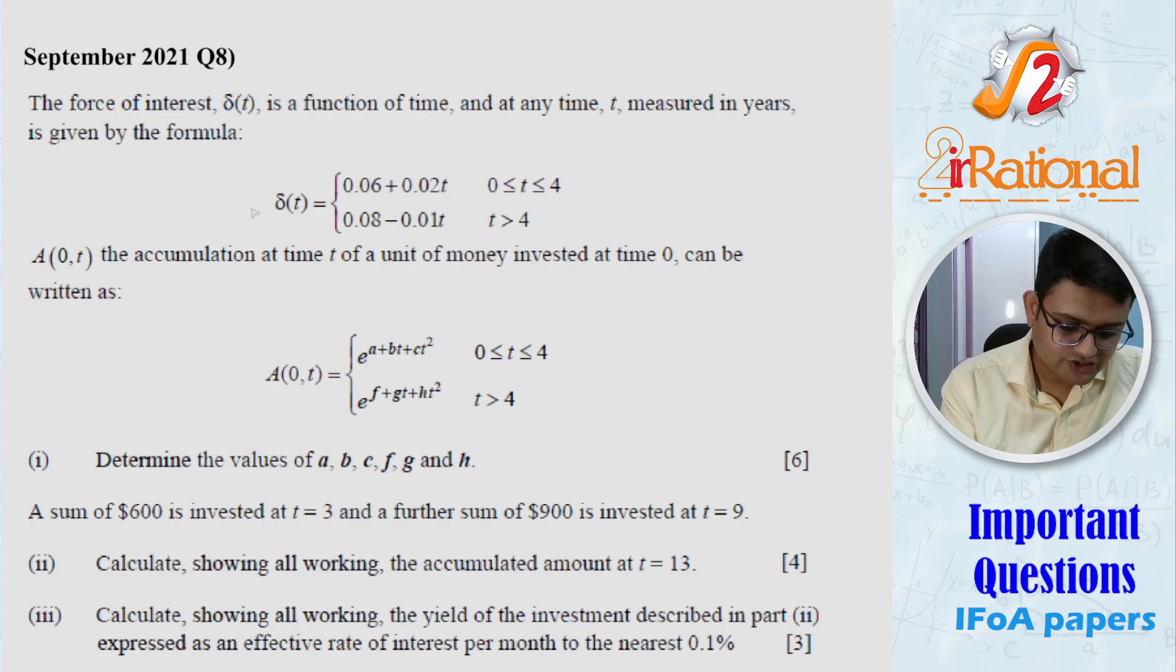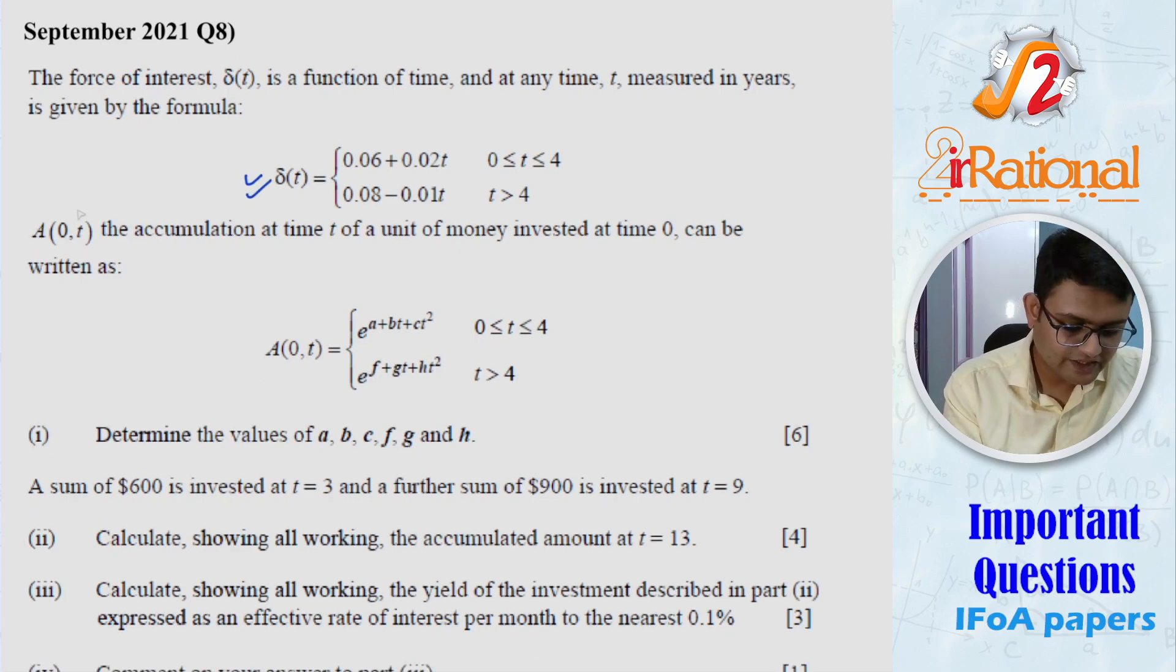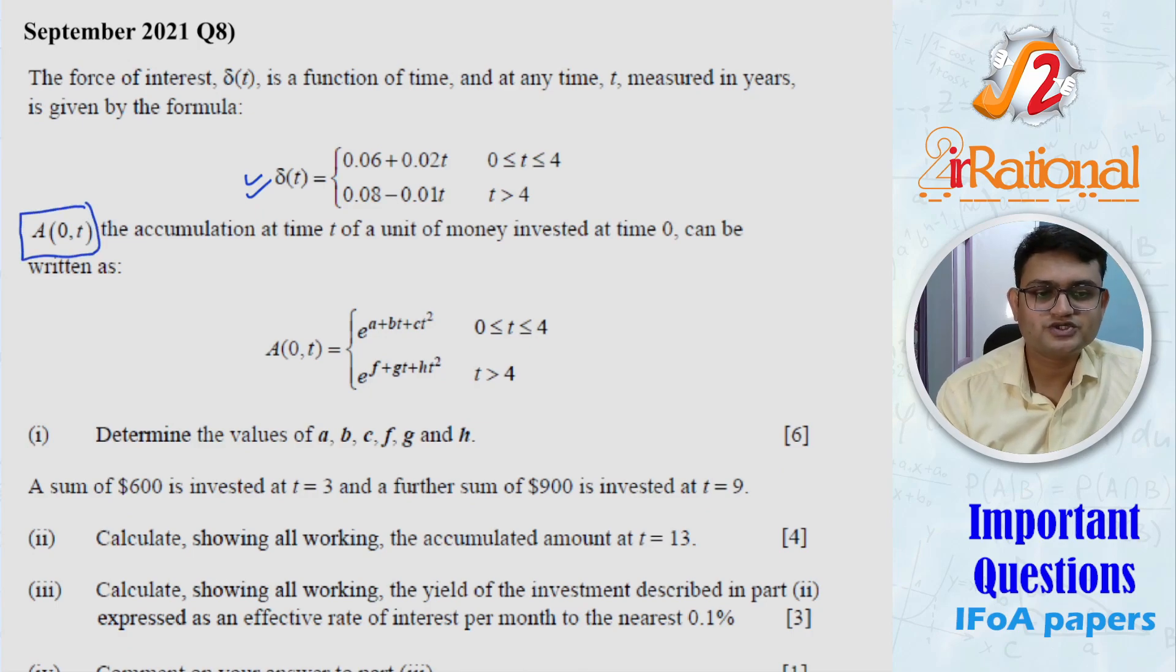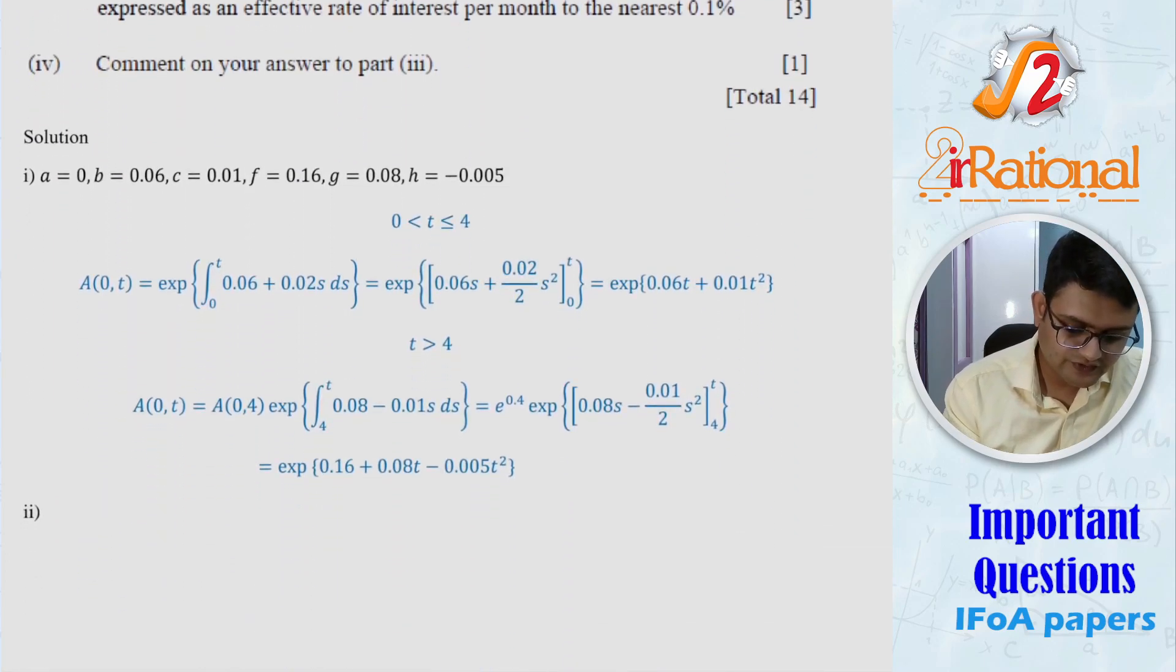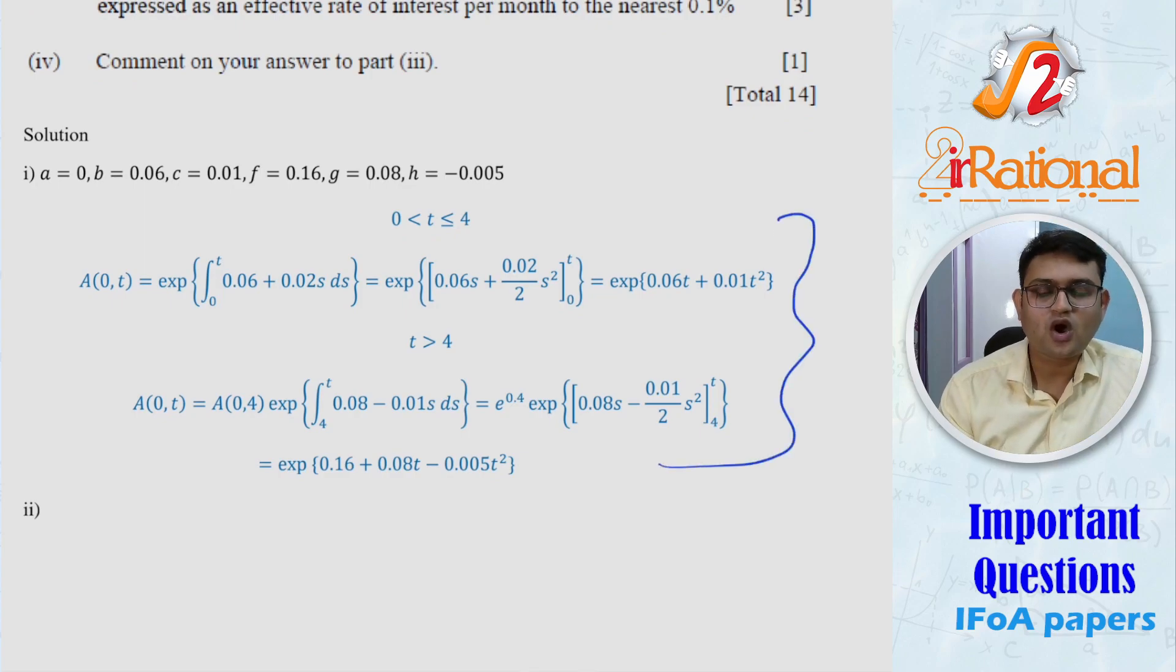Another similar type of question, you will find it in September 2021, question number eight, where this question was of accumulation and discounting chapter. So you had delta t given and they were asking you the accumulation factor 0 to t. So you can see they have labeled here e raised to a plus b t plus c t square. Similarly, e raised to f plus g t plus h t square. And we have to find what this a, b, c, f, g, h will be. So they gave you six marks just to write six values. Of course, you had to solve this. You will have to solve this on paper. You don't have to show this.